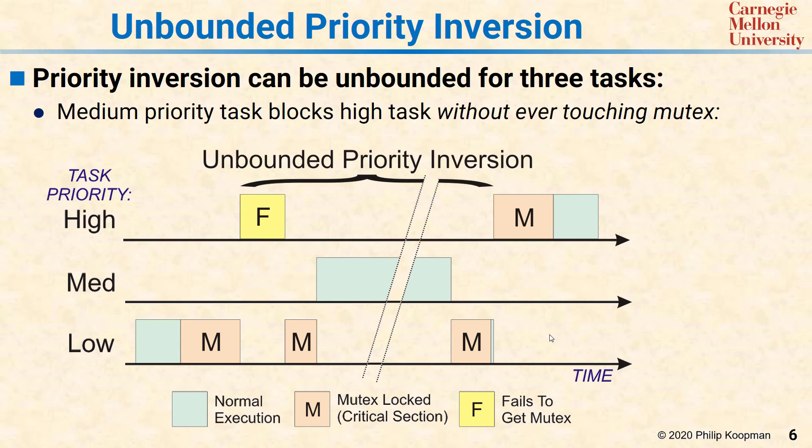The problem here is that a medium priority task has stalled the high priority task indirectly. Trying to account for all the possible medium priority tasks is really tough and basically gives you, in most systems, an unbounded priority inversion that's just way too long. To handle this case, you need some sort of plan to avoid that medium priority task delaying the low priority task.